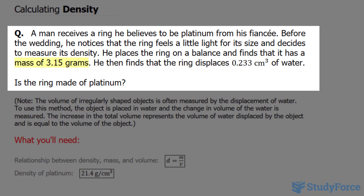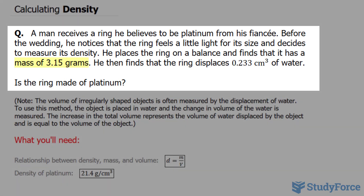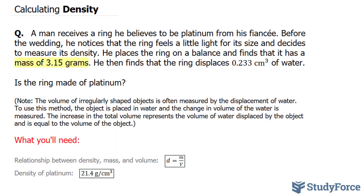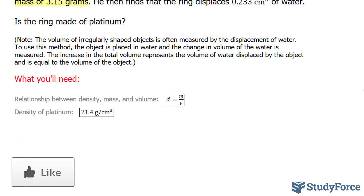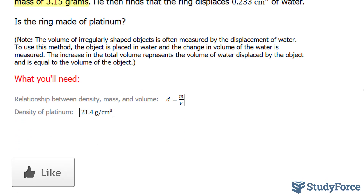He places the ring on a balance and finds out that it has a mass of 3.15 grams. He then finds the ring displaces 0.233 centimeters cubed of water. We need to find out whether this ring is made up of platinum. The actual density of platinum is shown right here. To do this problem successfully, we need to calculate the density using the formula d is equal to mass over volume, and then compare it to the actual density.